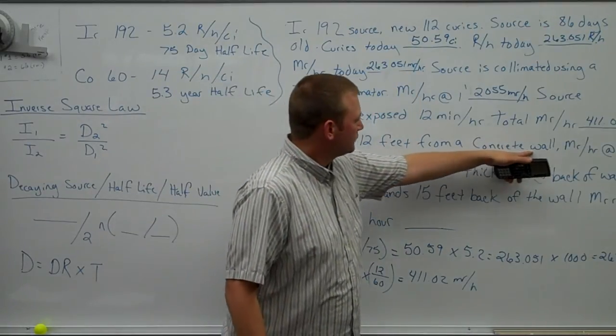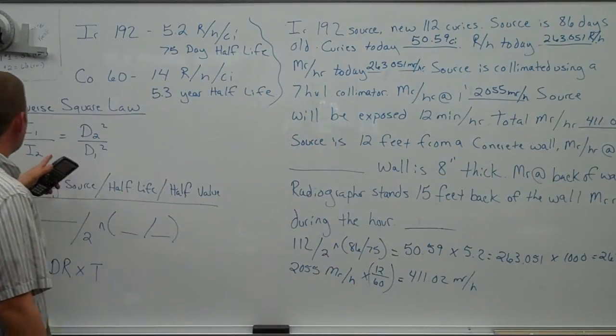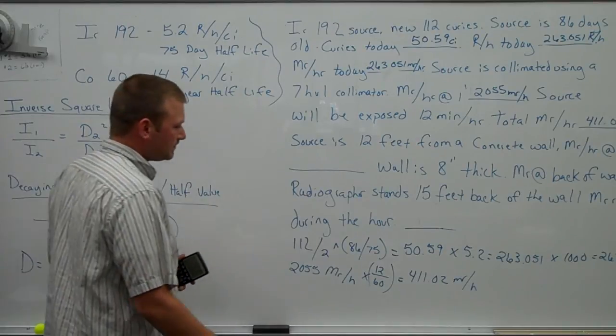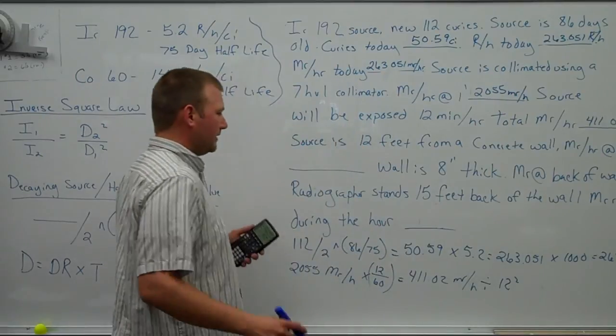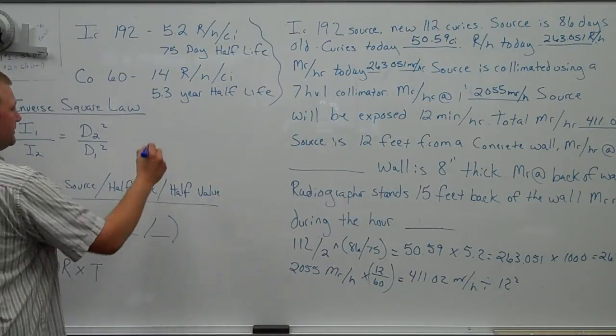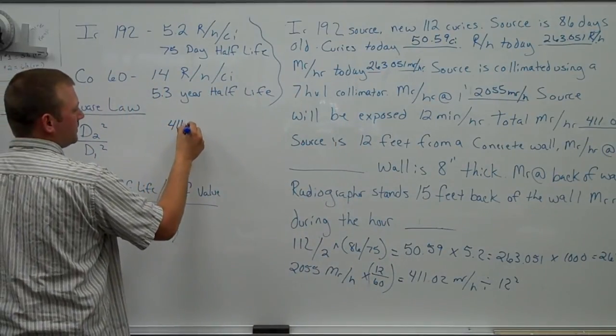Now we've got to move out 12 feet. So we're going to use this guy. Easiest way to do that, because we know we're already standing at 1 foot. But you can write it out if you like. If you wanted to, it would look like this: 411.02.